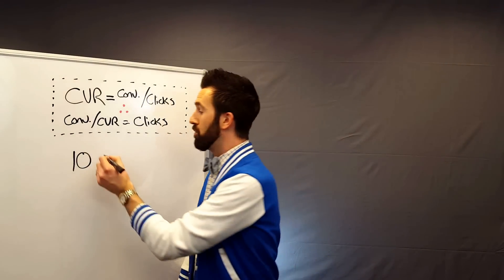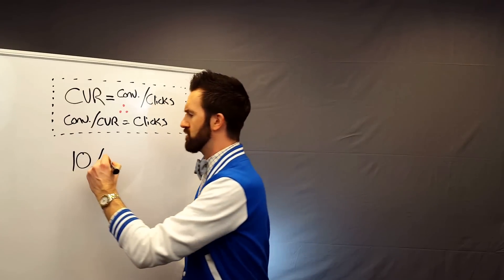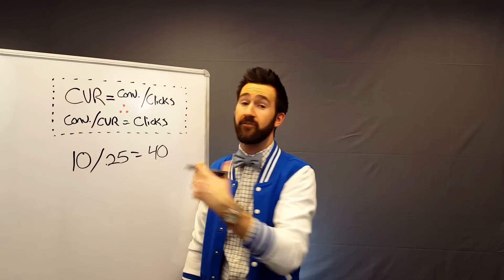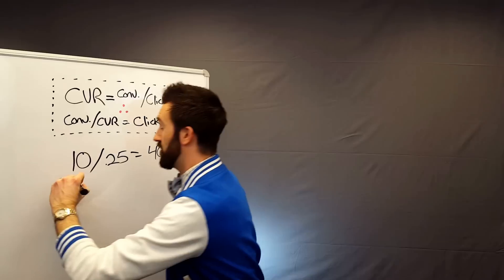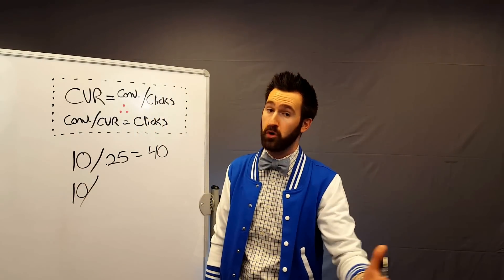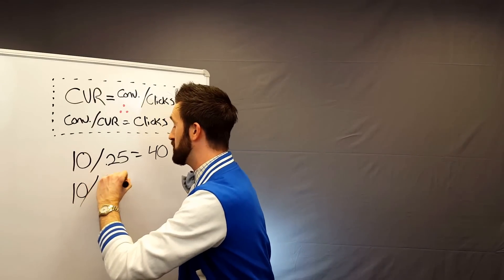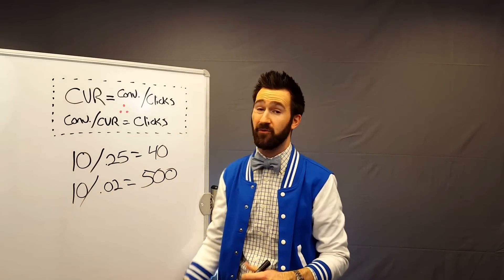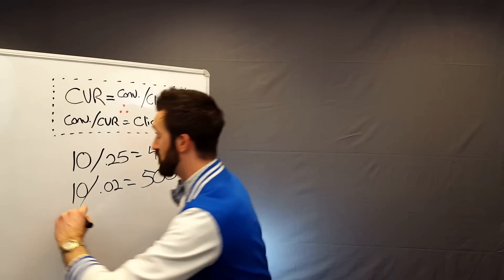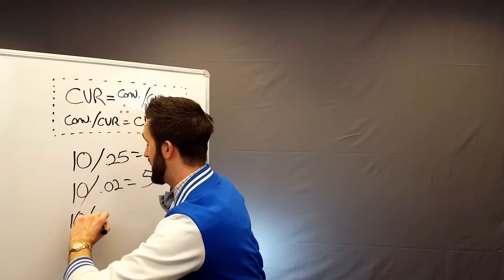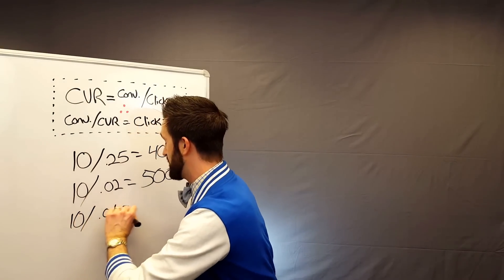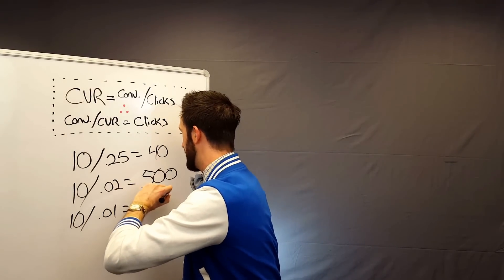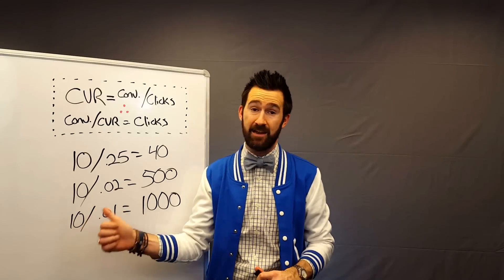If you're a mobile app install campaign, chances are your conversion rate is around 25%, so you're probably going to need 40 clicks in order to get 10 of those installs. Let's say you're an e-commerce campaign optimizing towards purchases — your conversion rate may be around 2%, and the number of clicks you'll need to get 10 purchases is around 500. If you're a lead gen campaign trying to drive conversions from a financial or EDU lead gen capacity, you may have a conversion rate of 1%, which means you'll need 1,000 clicks in order to prove out the quality of that ad and get 10 of those conversions.